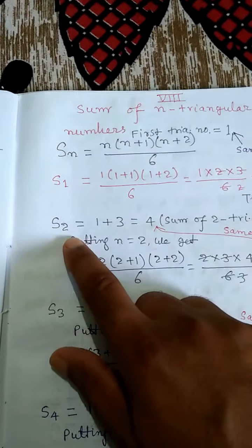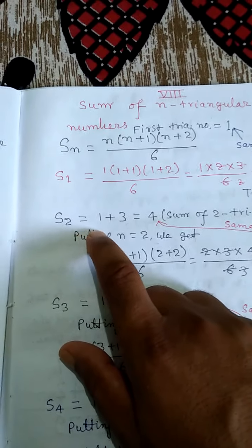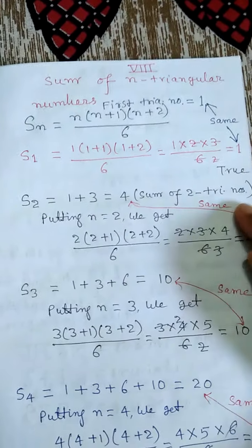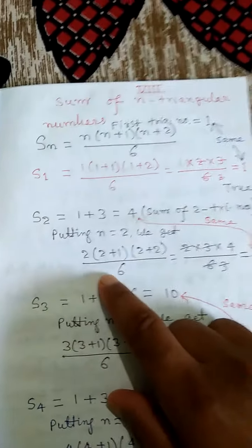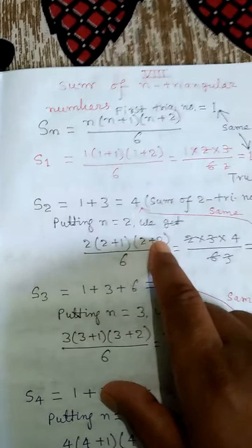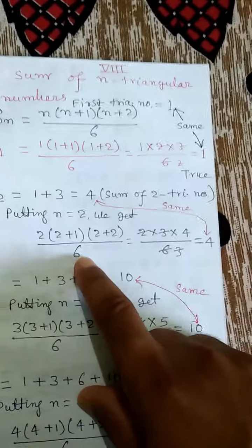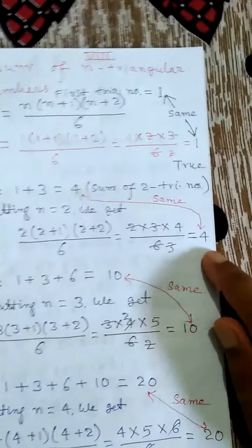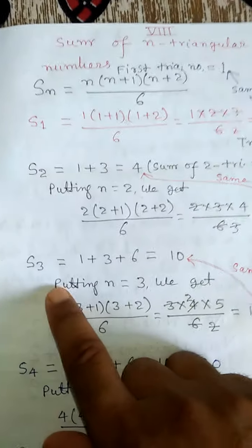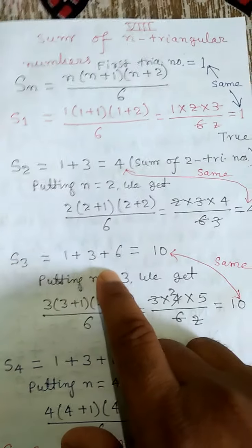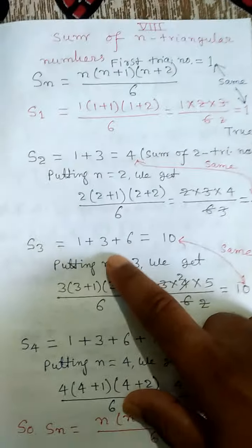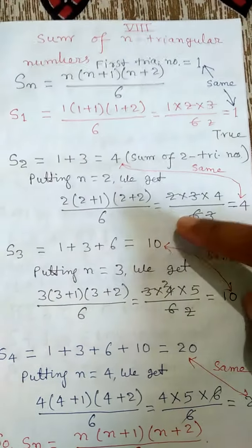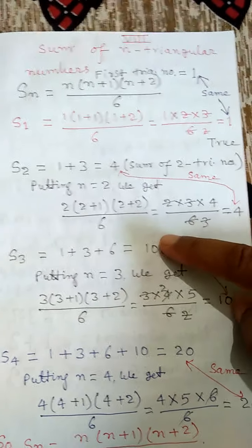The sum of the first 2 triangular numbers is 1 plus 3, which equals 4. When we put n equals 2, we get 2 into 2 plus 1 into 2 plus 2 by 6, and finally we get 4. S3, that is 1 plus 3 plus 6, equals 10. When we put 3 in place of n, we get 10 again. In this way, we get the same sum.